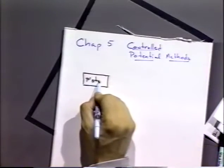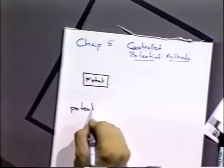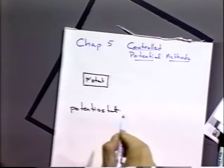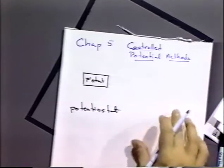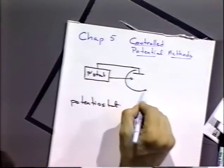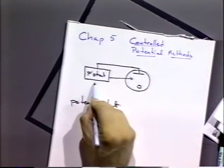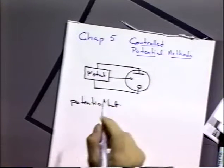Here we have a typical controlled potential experiment. We use an instrument called a potentiostat. A potentiostat — also known outside of electrochemistry as a voltage clamp — uses electronic feedback to maintain a constant potential at our desired electrode. It uses an auxiliary electrode and a reference electrode to maintain a proper potential at a working electrode.